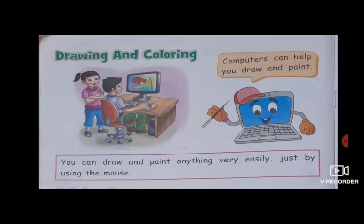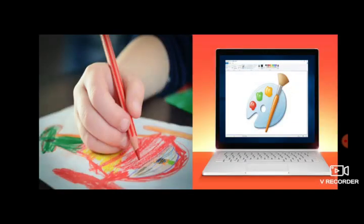Let's start with drawing and coloring. As you can see, a picture of computer holding a painting brush and tray. That means a computer can be used to draw and paint anything very easily. When you want to draw or color something, you have to get paper, drawing sheet, pencils, markers, crayons, etc. But in computer you don't need all those things.